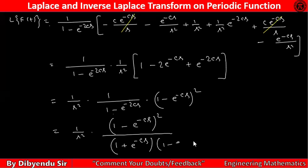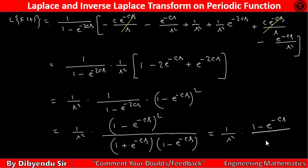So finally the answer is one by s² into one minus e to the power minus cs, divided by one plus e to the power minus cs. This is the correct answer. Please correct it in your book. Thank you so much.